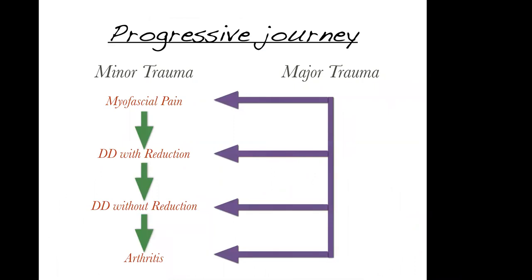I've also created something called the progressive journey for patients. Most start with minor trauma — grinding or habits — and the muscles first become inflamed. If the muscles become inflamed, the cartilage becomes displaced. Normally it will reduce back, but if it doesn't, it becomes stuck and we get limited mouth opening. Then if there's no more cartilage between the bones, arthritis begins. This is a lifetime progression. Patients on the right who get major trauma can sometimes jump straight to arthritis — for example, boxers.